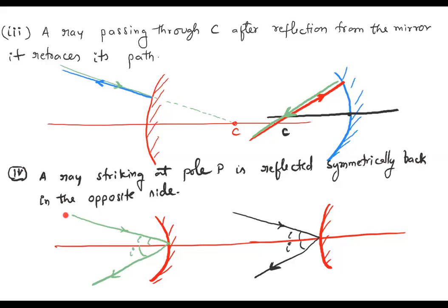If a ray is striking the pole of the mirror, the principal axis itself is the normal since it is perpendicular to the mirror and passes through C. Since angle of incidence equals angle of reflection, the ray is reflected symmetrically. The angle of incidence equals the angle of reflection, so the ray reflects symmetrically in both situations.